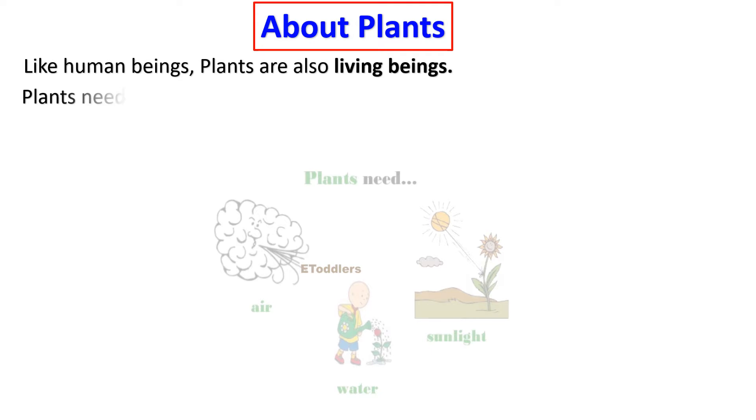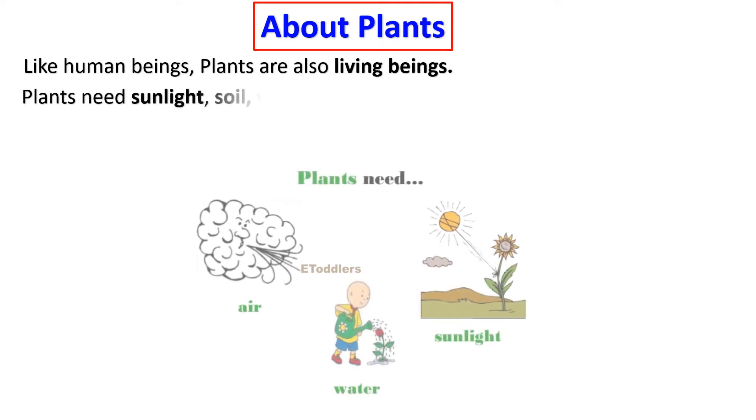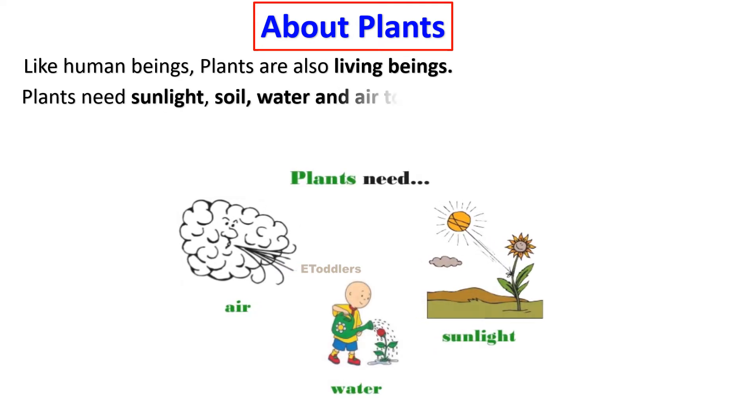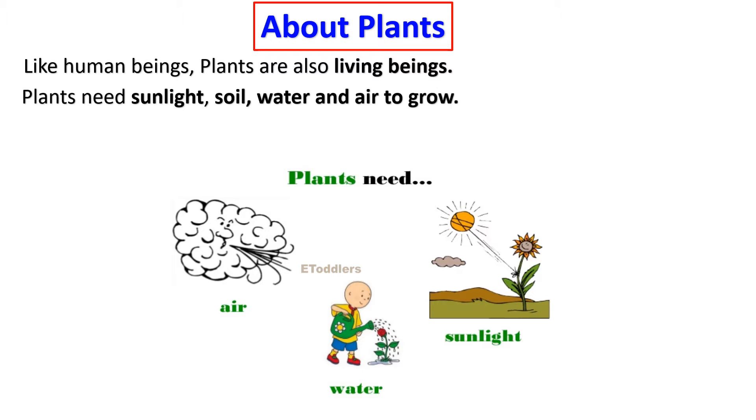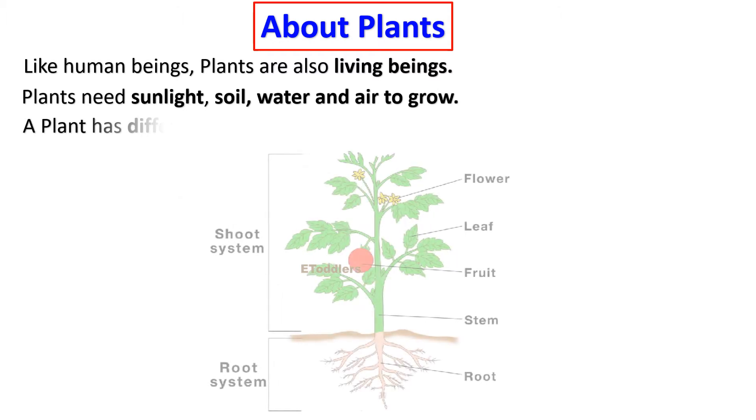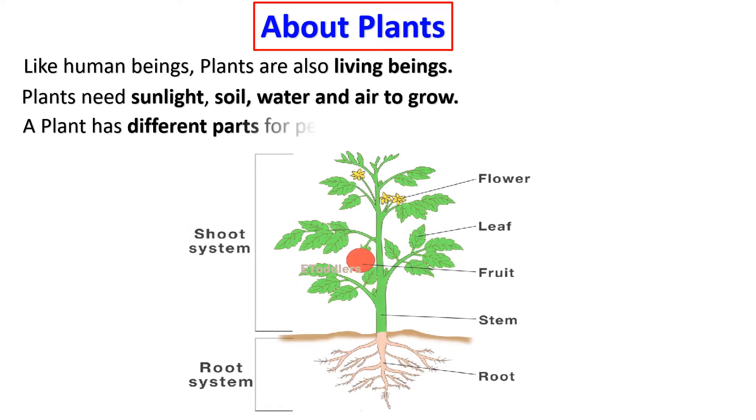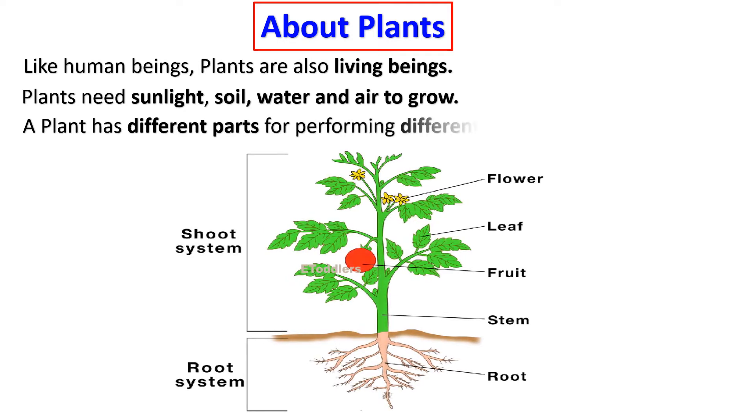Plants need sunlight, soil, water and air to grow. A plant has different parts for performing different functions.